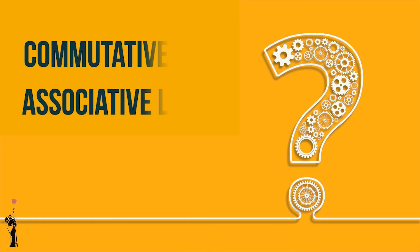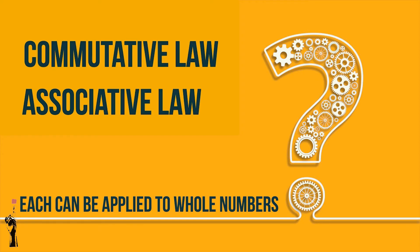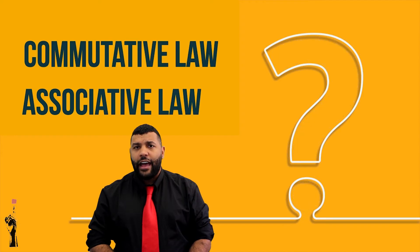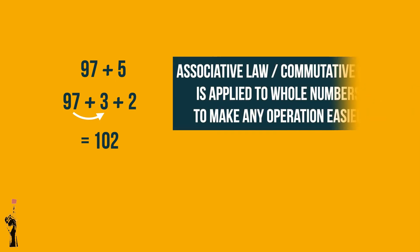Why is it important to know the commutative and associative laws? Each one can be applied to whole numbers to make an operation slightly easier. For example, 97 plus 5 can be broken up into 97 plus 3 plus 2. So 97 plus 3 is 100, plus 2 is 102. These laws help make any operation easier.